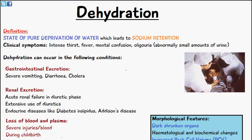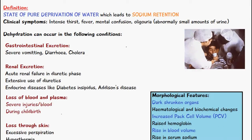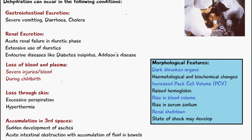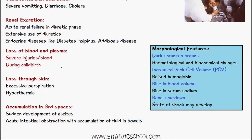Another way we can get dehydrated is by the loss of blood and plasma, which can occur in severe injuries, severe blood loss, or during childbirth where we can lose a lot of fluid. We can also get dehydrated through water loss through the skin, such as excessive sweating, perspiration, or hyperthermia. Another cause is accumulation of fluid in third spaces, such as the development of ascites.